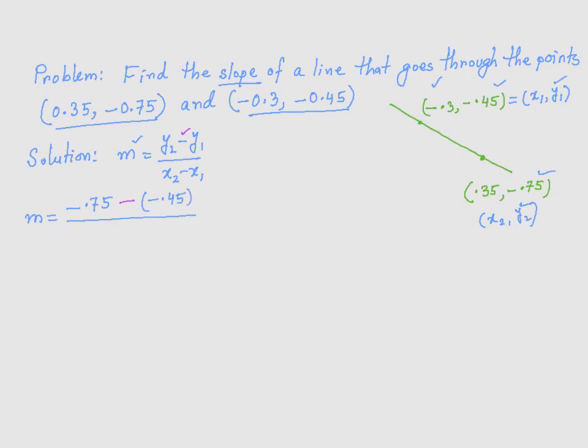Divided by x2. What is my x2? 0.35. Minus, this minus is this one from the formula, x1, which is negative 0.3. So I am going to put it inside the parenthesis, negative 0.3.